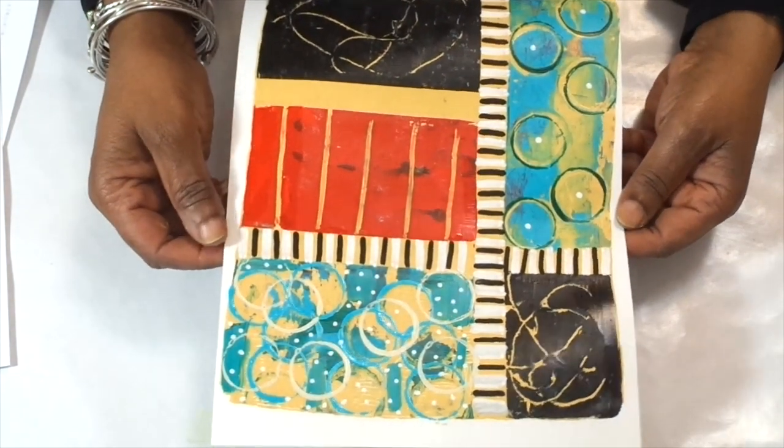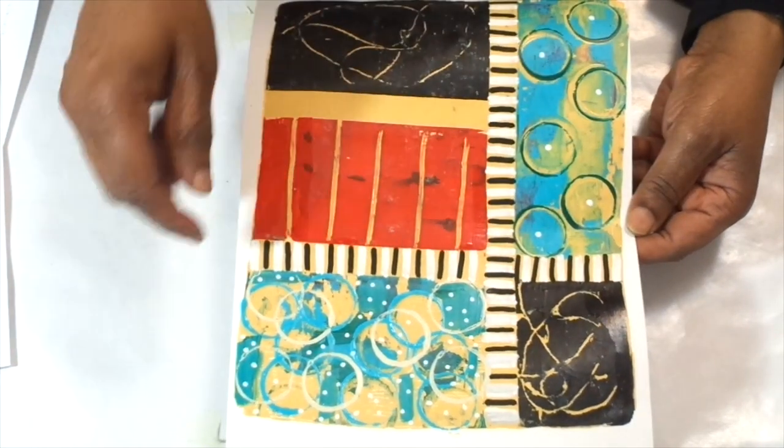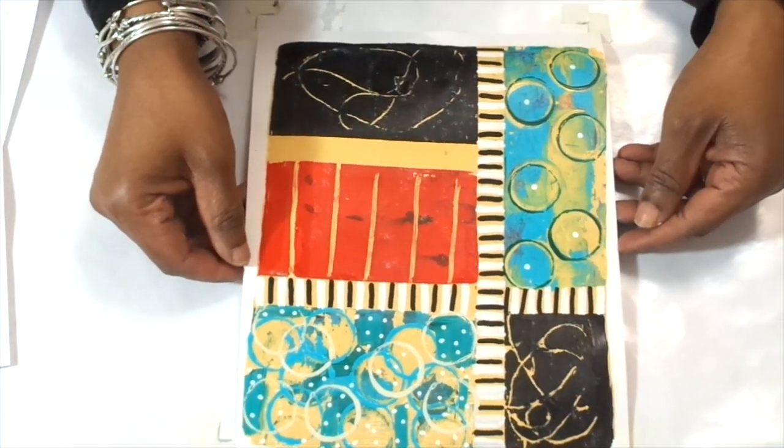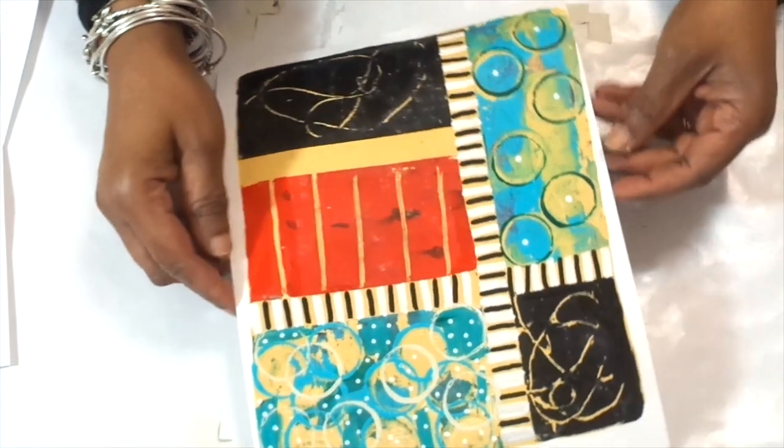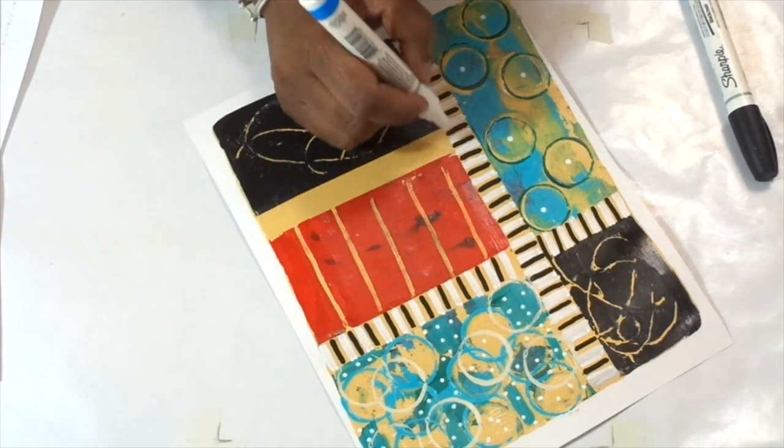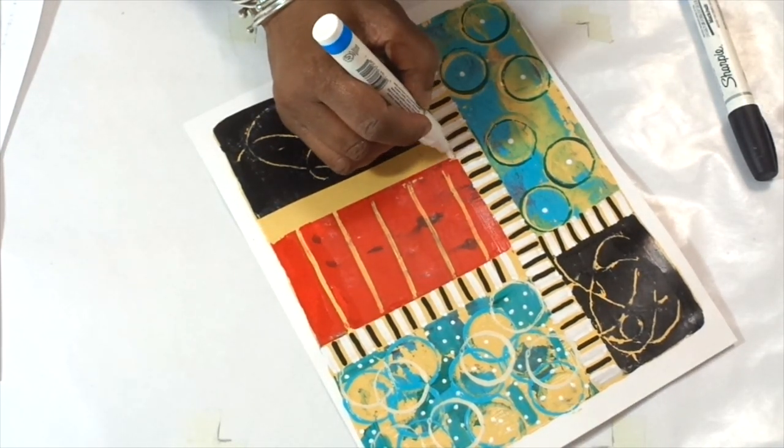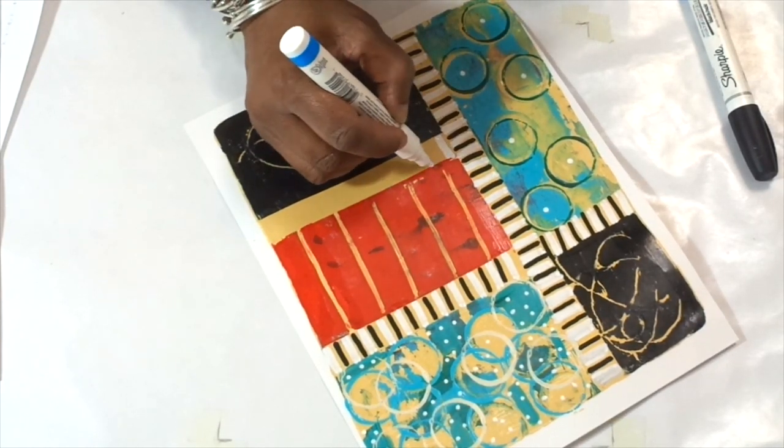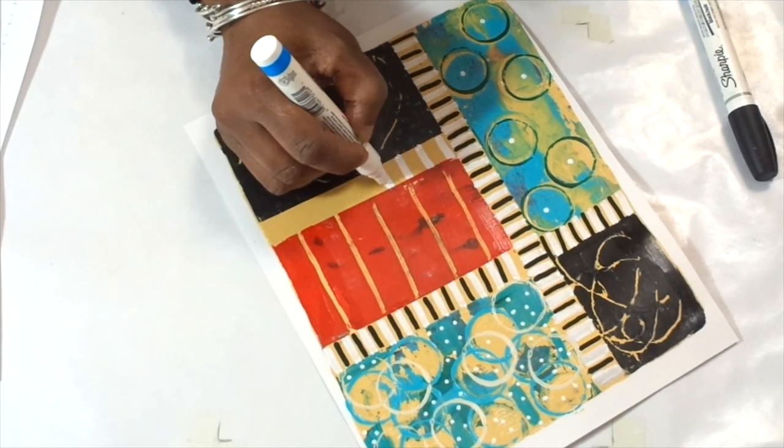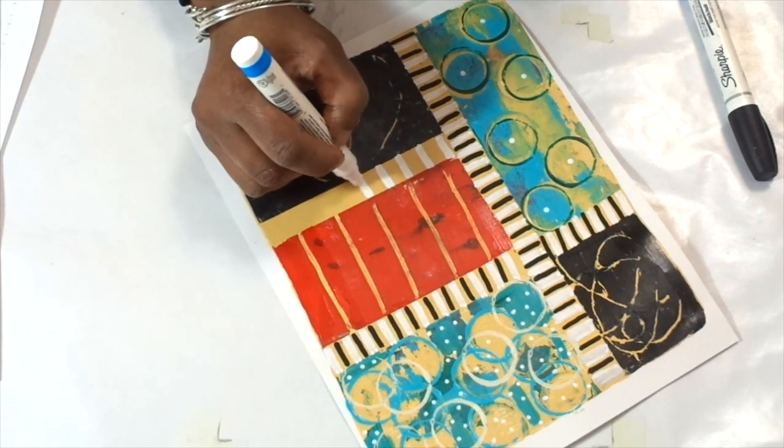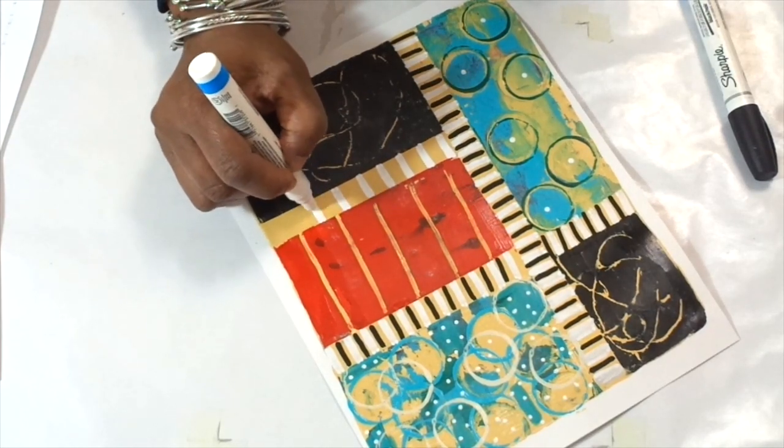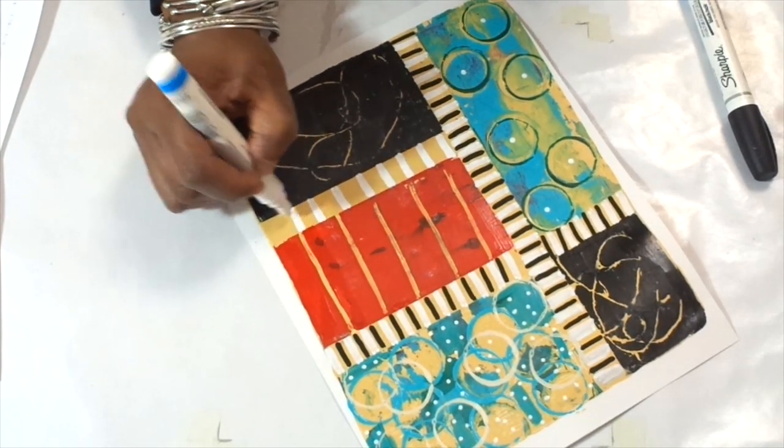And then I took my Sharpie pens and started making these markings. So I wanted to fill in where the tape was to give it some interest. And so that is simply done by taking your Sharpie pens. I found that the white Posca paint pen did not come out as bright white on top of this paint, so I had to use my Sharpie for that so that I can get the bright white. And I used the Sharpie paint pen in black as well.